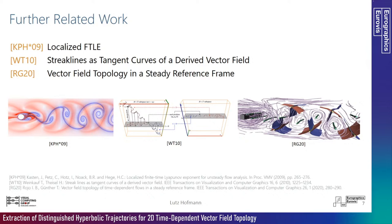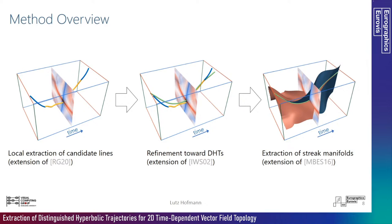In the visualization context, the localized flow has been used by Carsten and colleagues to compute a localized FTLE variant. Weinkauf and Teisel used it to derive a vector field where streak lines are tangent curves. Recently, Rocher and Günther proposed a new approach using an optimal steady reference frame via local linear optimization. Our method for computing 2D time-dependent vector field topology has three steps: first, locally extract candidate lines using an extension of Rocher and Günther's method; second, refine these toward hyperbolic trajectories using an extension of Iida and colleagues' method; and finally, seed streak manifolds along those hyperbolic trajectories using an extension of Machado and colleagues' method.